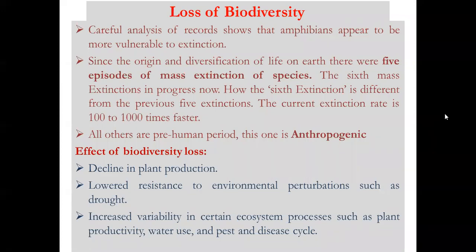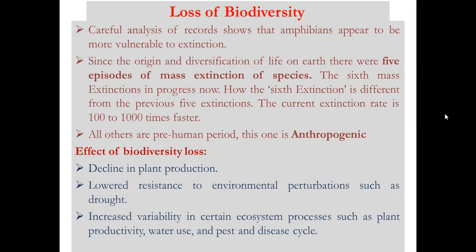Anthropogenic mass extinction refers to mass extinction occurring in the human period — the study of humans is called anthropology. This sixth extinction is a continuing process progressing rapidly and occurring in the human period, which is why it is called anthropogenic mass extinction.